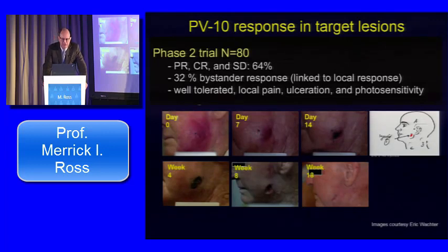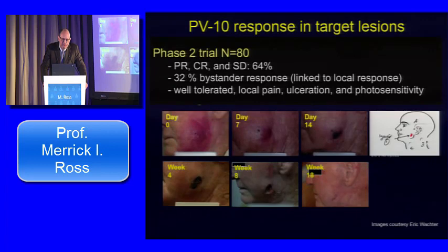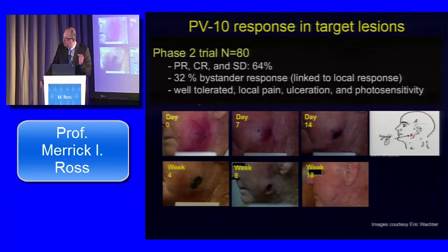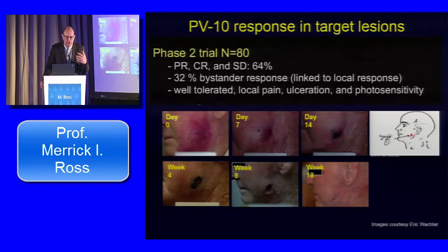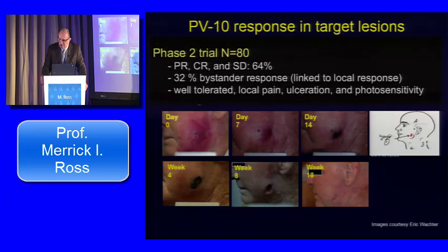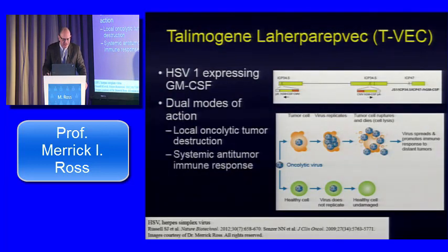A phase 2 trial of 80 patients we participated in — completed about three years ago — showed 64% of patients achieved combined partial response, complete response, or stable disease. There was a 32% bystander response linked to local response, meaning that if you didn't get a good local response, you didn't get a systemic response. It's a very well-tolerated approach: patients are injected in the clinic with local pain, ulceration, and photosensitivity as the main concerns.